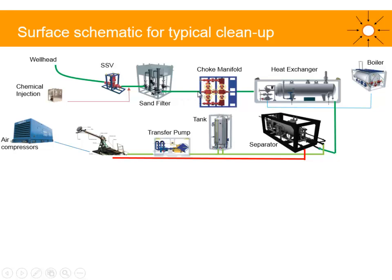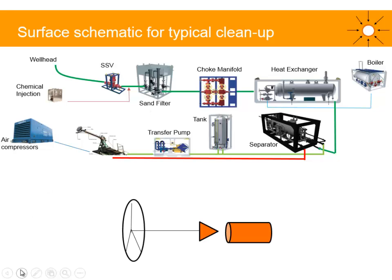Then we have the choke manifold, which is divided into two flow paths. On the first flow path, we have an adjustable choke — you can see a wheel here. The adjustable choke means we can change the choke size quickly using the wheel. The mechanism has a wheel connected to a cone; as we turn the wheel one way or the other, the cone moves in or out of the cylinder and we change the flow area.